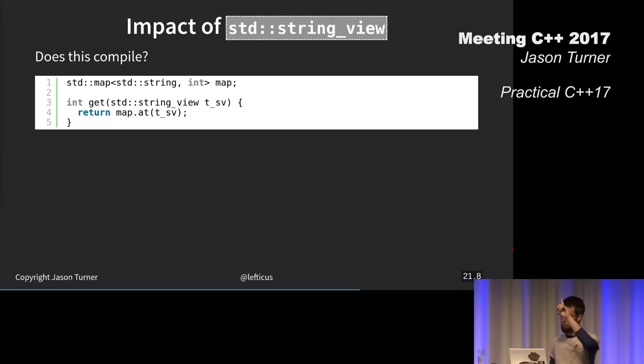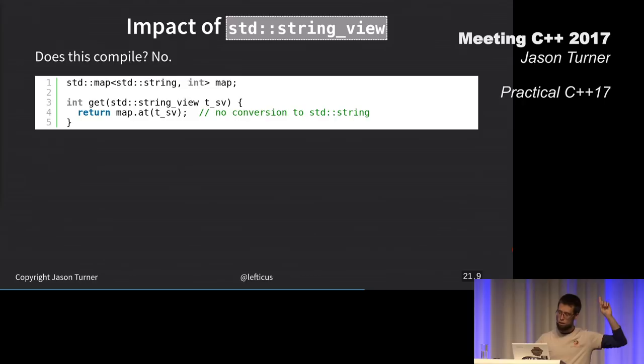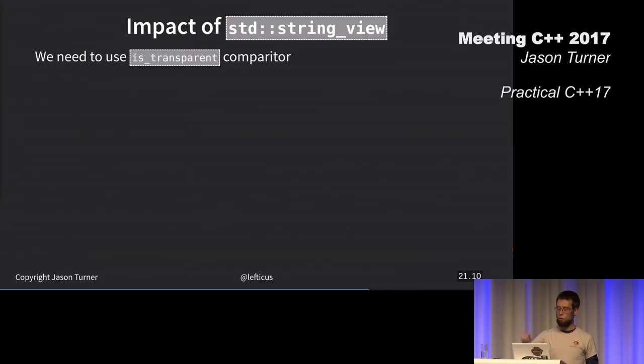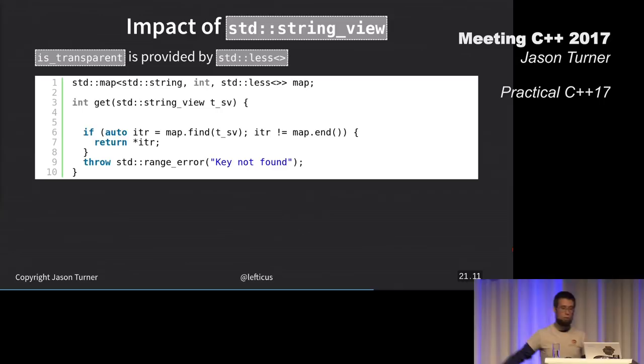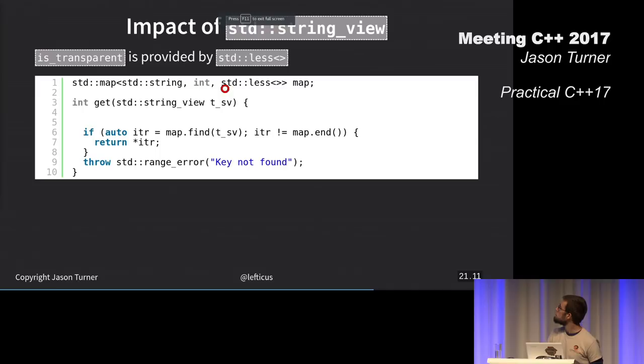We must add a transparent comparator. If you add your own transparent comparator, this is what I've done here on line one. I'm using std less with its no template parameter version, and this now compiles and works. Don't have time to go into what a transparent comparator is, but it looks like this.